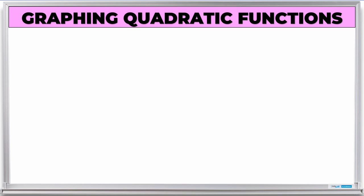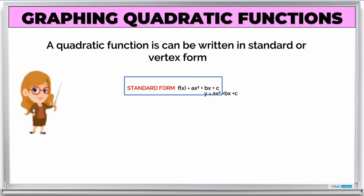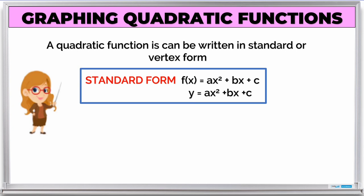Let us recall the quadratic function. A quadratic function can be written in standard or vertex form. The standard form is f(x) = ax² + bx + c, or y = ax² + bx + c. f(x) is also equal to y — they are the same.